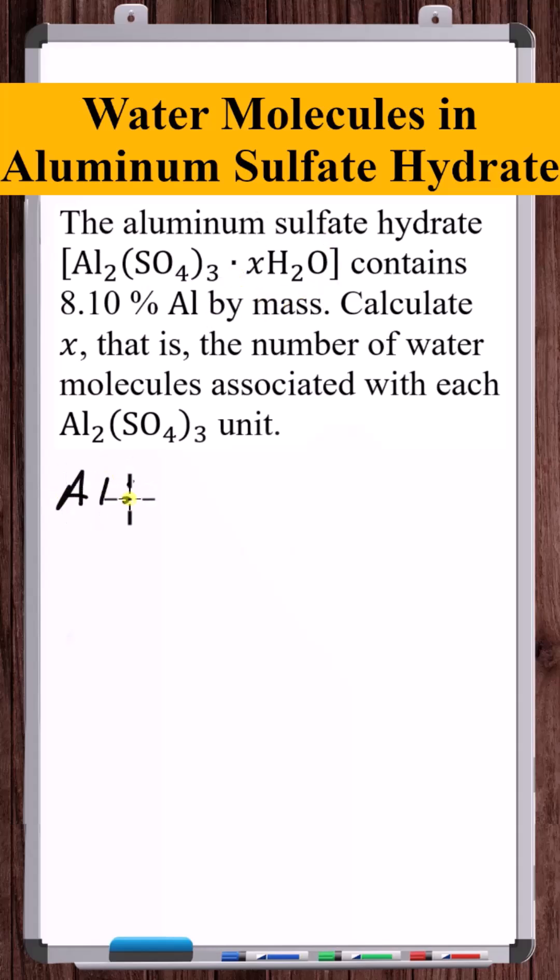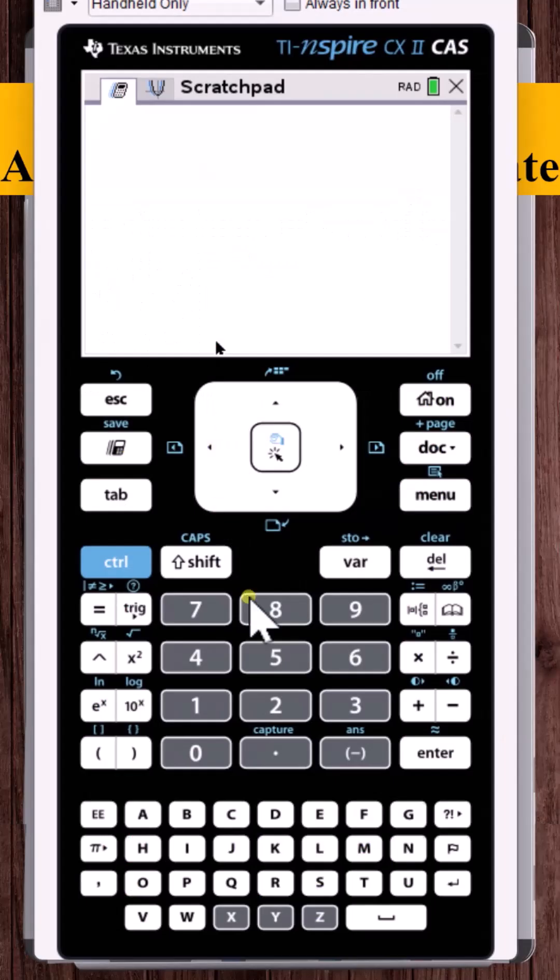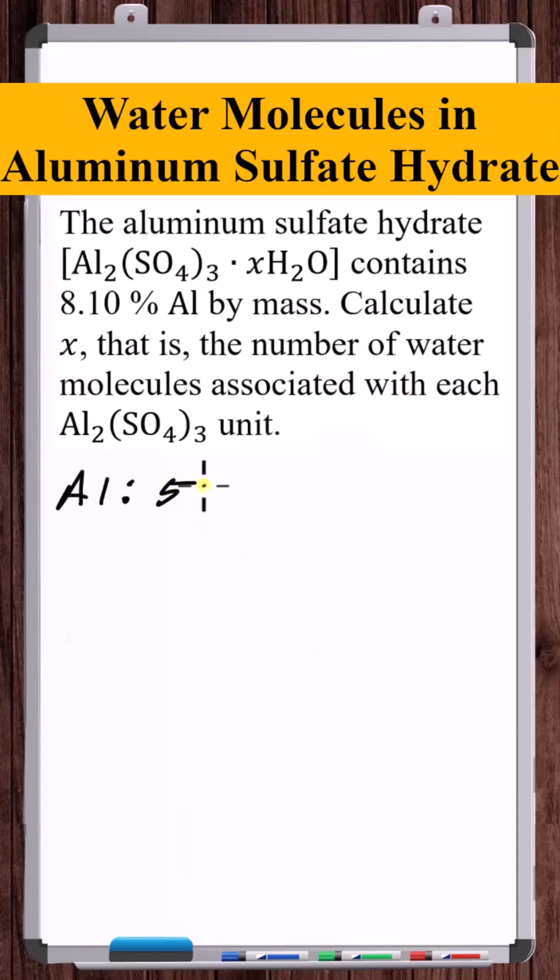We've got for aluminum, two aluminum atoms. Atomic weight of aluminum is 26.982. We typically write this as the molar mass in grams per mole, but in this case, we could just put it as AMU, right?